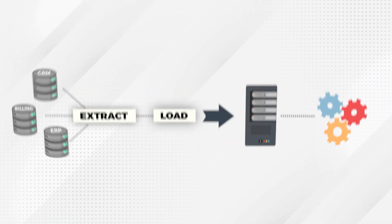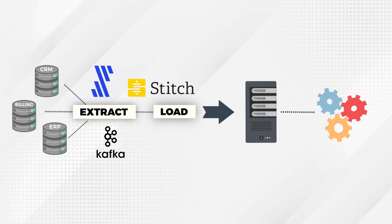For those that choose the ELT approach, you'll often see multiple specialized tools within your workflow rather than just one that handles everything together. A few examples are Fivetran or Stitch for the extract and loading. You could also use streaming tools like Apache Kafka or AWS Firehose to extract data in a more real-time fashion. And DBT is my favorite for the transformation component of an ELT process.